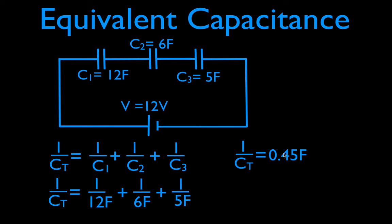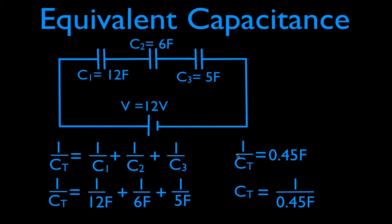It is important to remember: this is not the equivalent capacitance — this is 1 over the equivalent capacitance. We want to know what the equivalent capacitance is. Algebraically, I'm going to take the reciprocal of both sides of the equation. I'm going to flip it over and get CT is equal to 1 over 0.45.